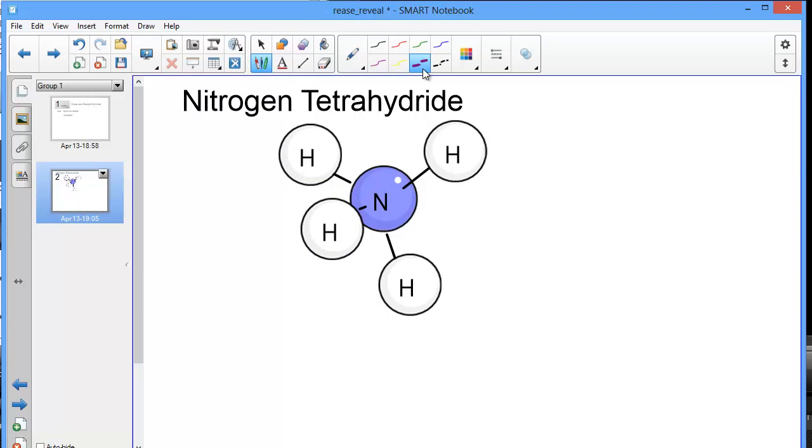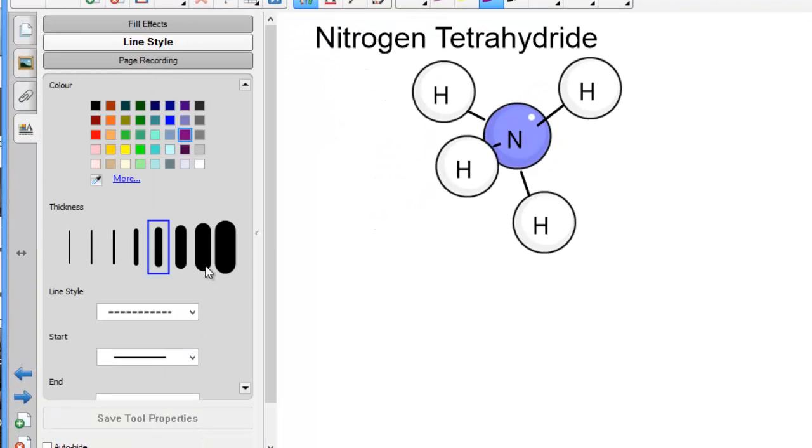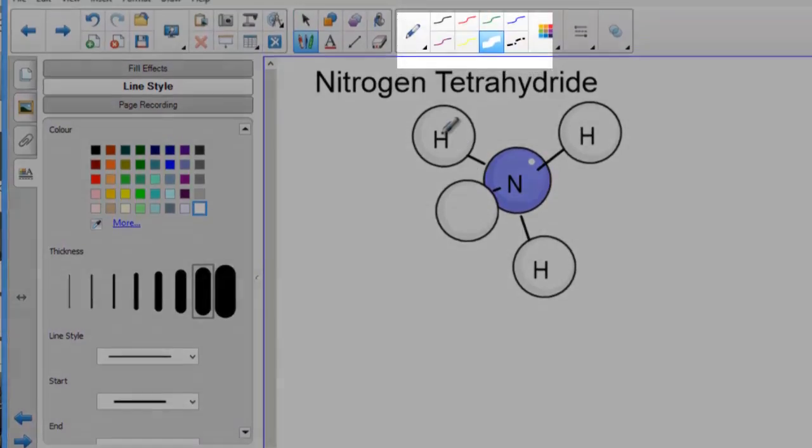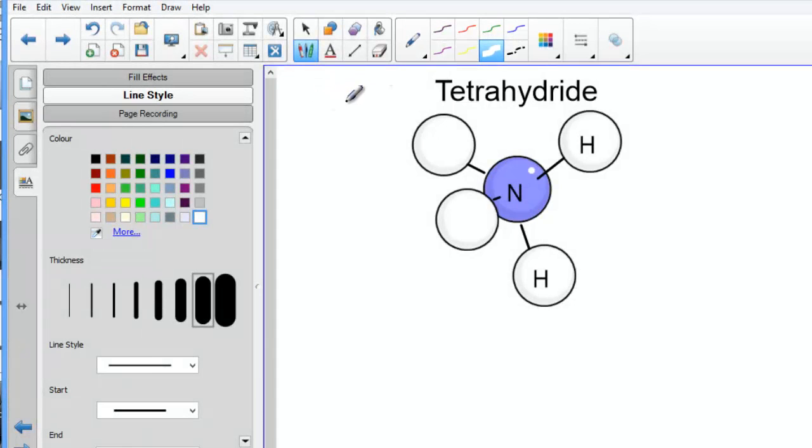If you are going to create lots of Erase and Reveal activities, it's an idea to learn how to permanently customize a pen. You do this by selecting the pen and then changing the properties. I'm going to make it nice and thick white. Notice I'm also going to change the line style to solid. The important thing is to make sure you hit save tool properties. This will permanently change the pen to the solid white color that I need to create Erase and Reveal activities on a white background.